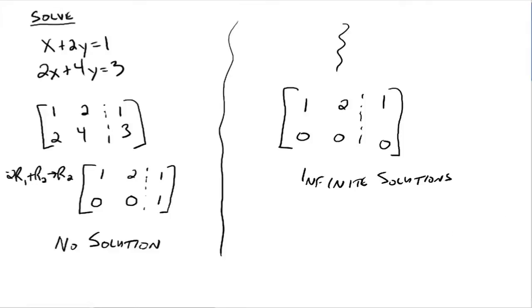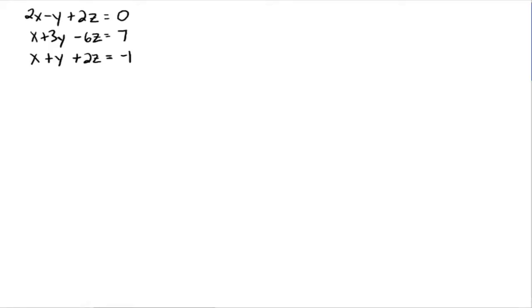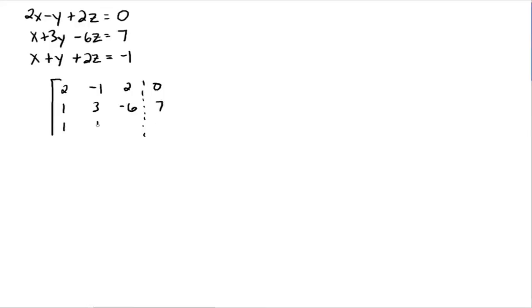Now I want to do one more example using row transformations, and this time I'm going to do a three by three. I'll do a couple of steps from one matrix to the next. First thing we'll do is write the augmented form: two, negative one, two, zero; one, three, negative six, seven; and one, one, two, negative one.